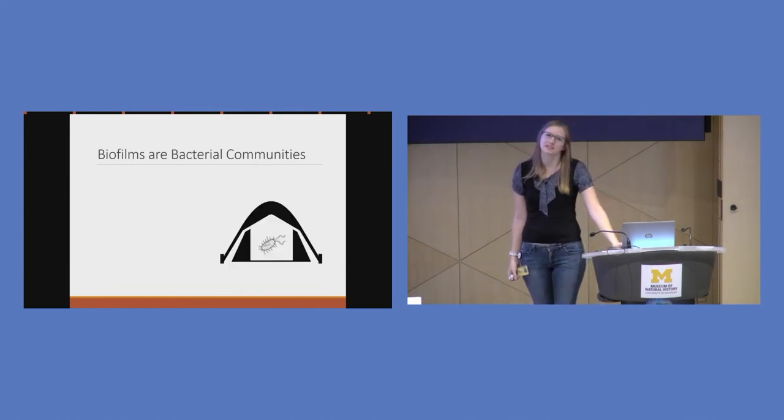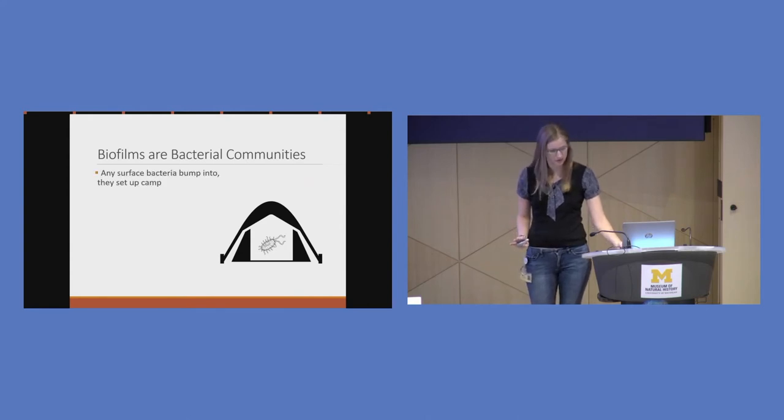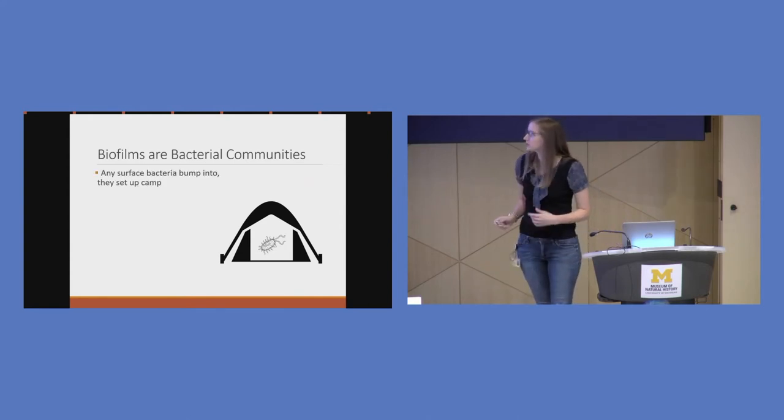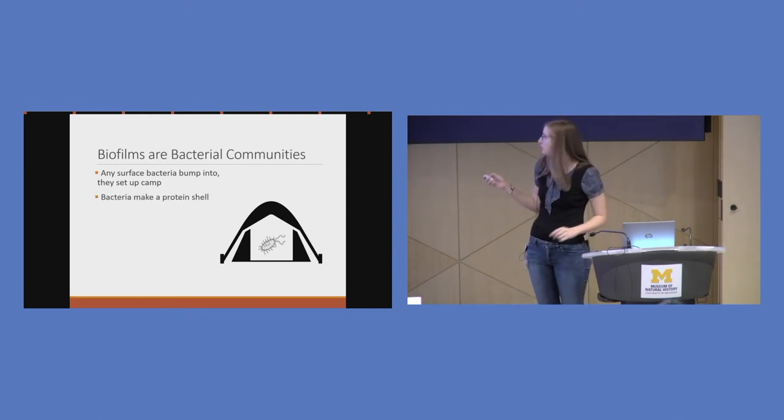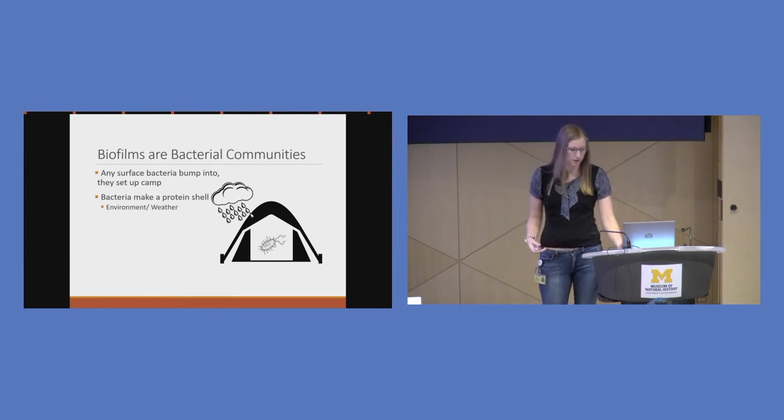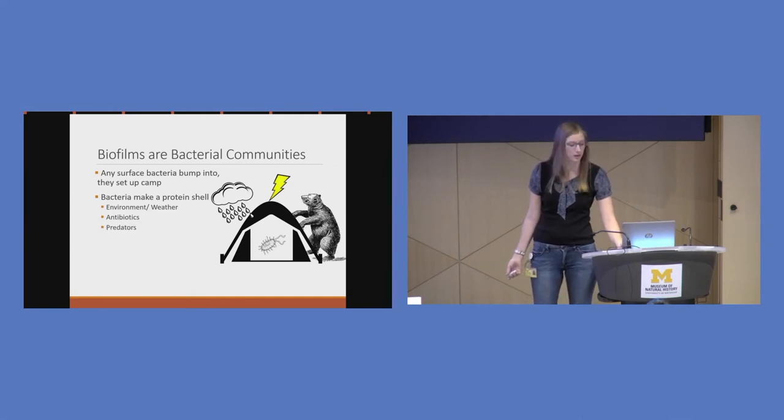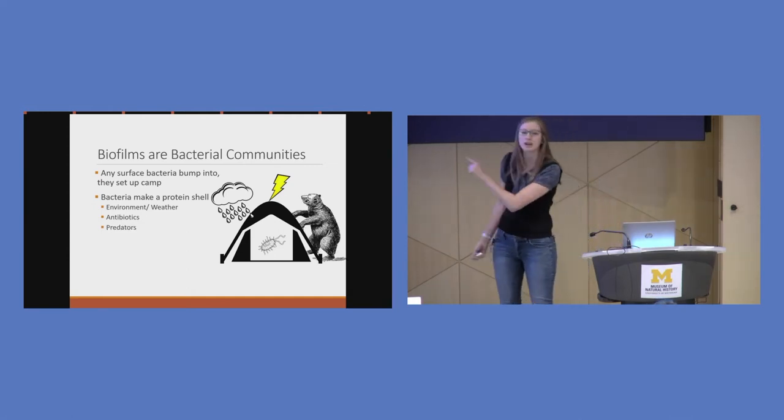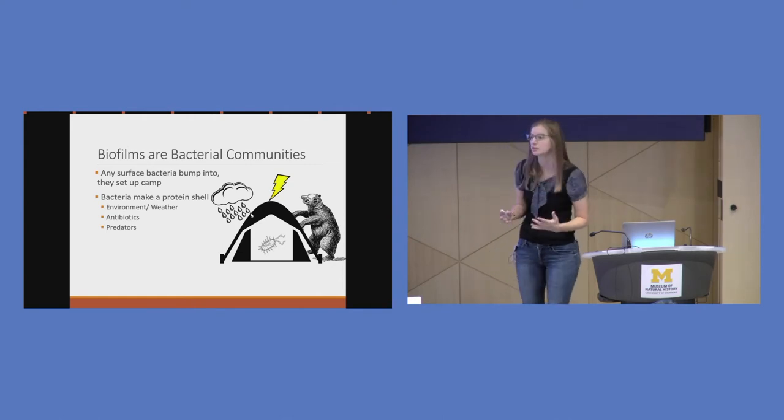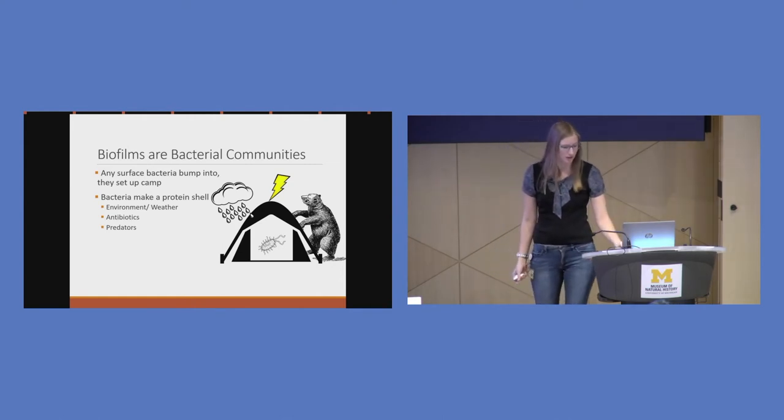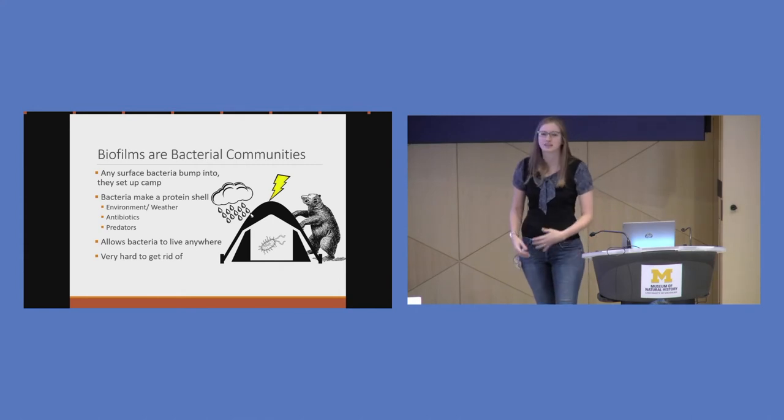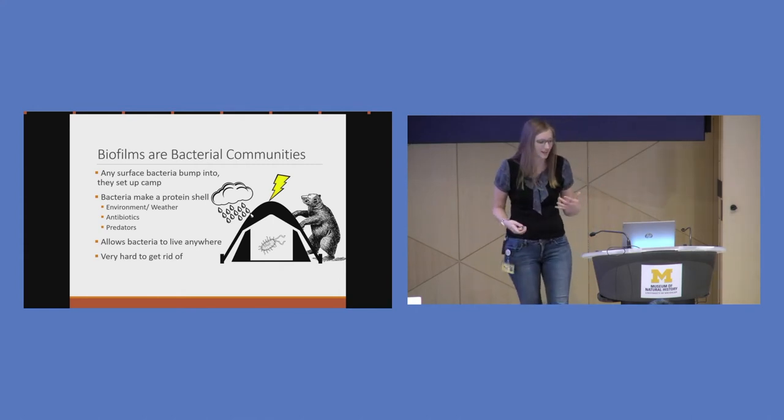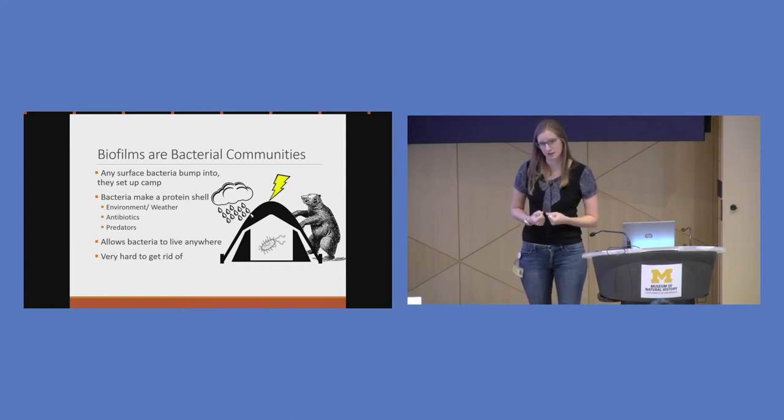I like to think of them as the bacteria going camping, and they are really good at camping. Anytime they bump into a surface they can set up this camp, and the first thing they do is make this protein shell. They make a tent for themselves to protect them from everything. It could be weather, the environment, antibiotics that we try to kill them off with, or even predators. Okay, maybe not bears, but like really small worms and other bacteria that would try to cause them harm. And this allows the bacteria to live everywhere in the volcanoes, in the clouds, and it makes it really hard for us to get rid of them.